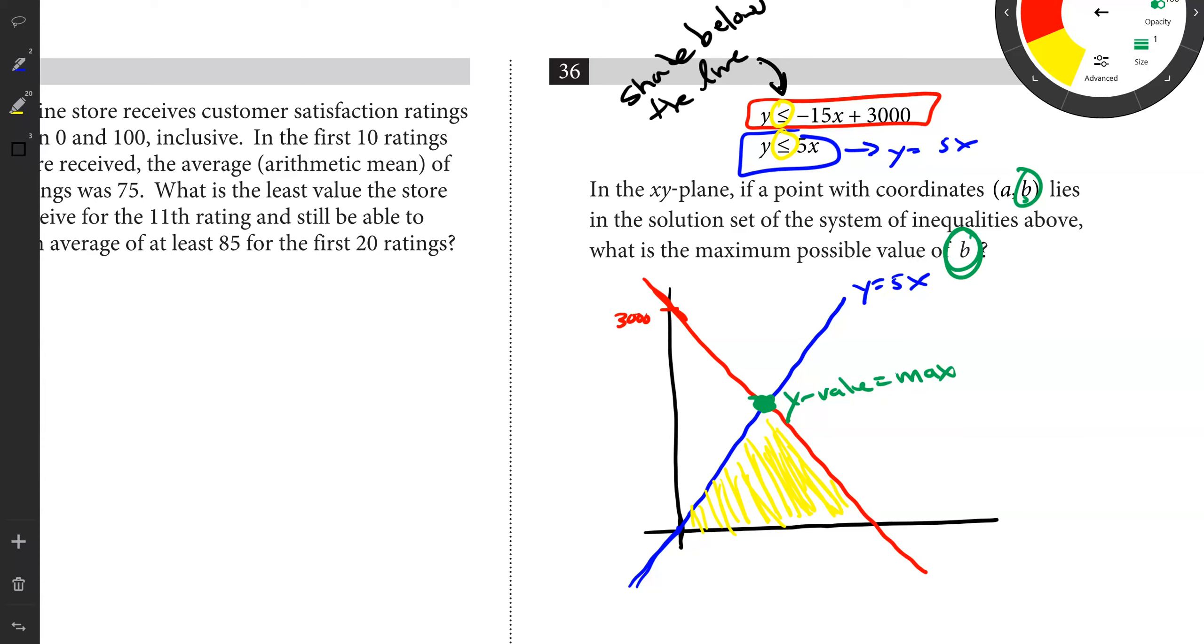Let's figure out where they intersect. I want to set them equal and solve. Negative 15x plus 3000 equals 5x. So 3000 equals positive 20x. So x equals 150. And I can go back and solve for y. Y equals 5 times 150, which is going to be 750. That's my largest possible b value, or y value in this case. That's it for this video. Thank you guys for watching. Have a great day.